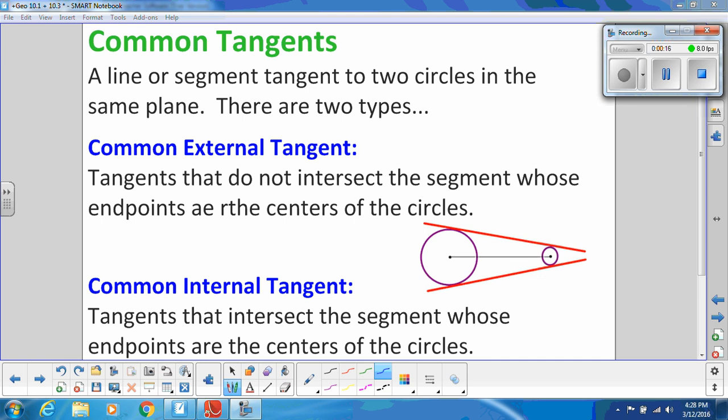There's two different kinds. We have a common external tangent, and those are tangents that do not intersect the segment whose endpoints are the centers of the circle. So, you see these two red tangent lines, and we have this segment that joins the circle, and they're not crossing those. It kind of is how it's described. They're external. They're on the outside of the circles.